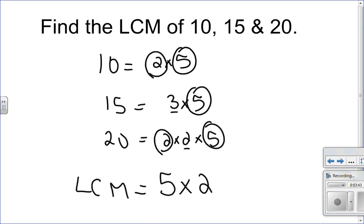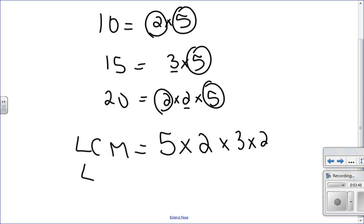So multiply by whatever's left over, and we multiply those together to get what the lowest common multiple is. So 5 times 2 times 3 times 2, and I get 60.